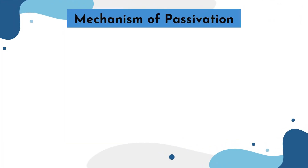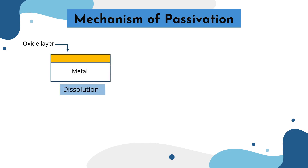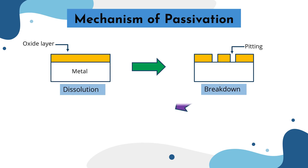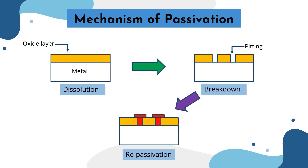The mechanism of passivation can be divided into three stages. Dissolution occurs at the first stage, followed by breakdown of the oxide layer, and repassivation occurs again at the final stage.